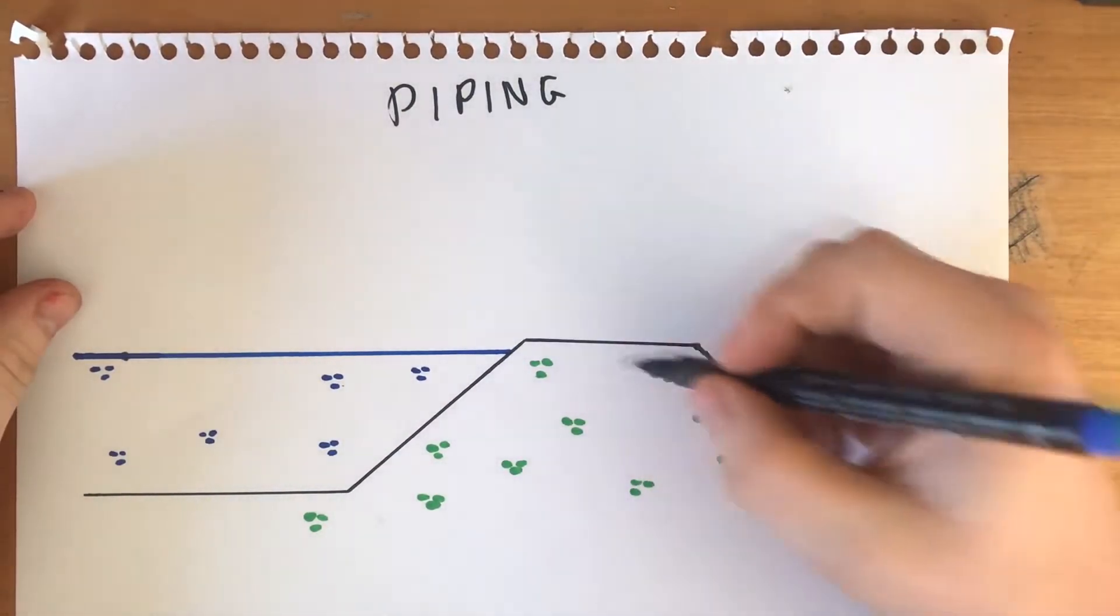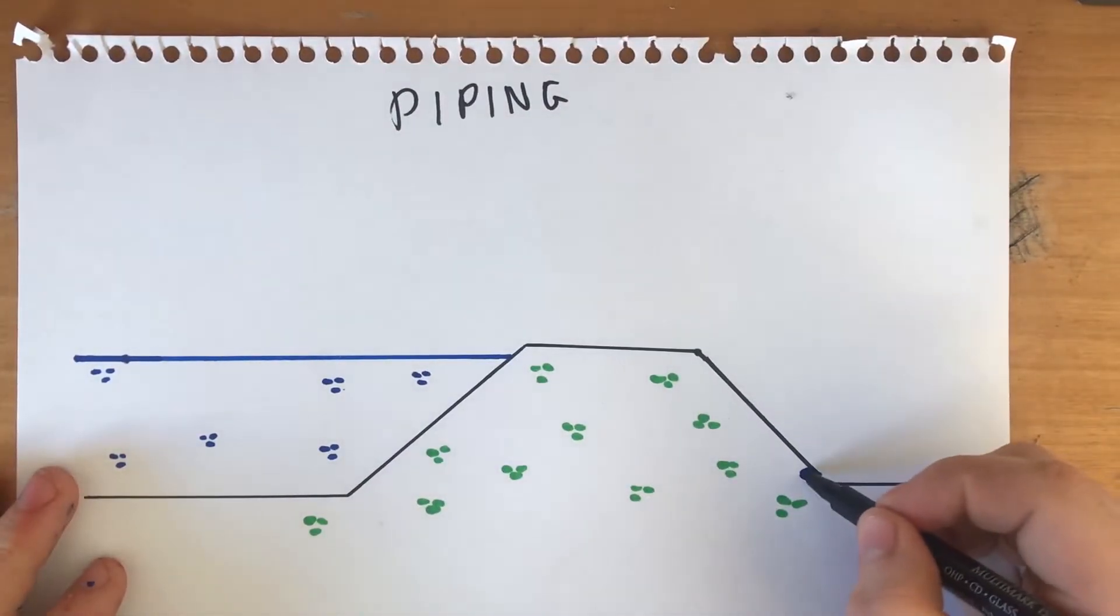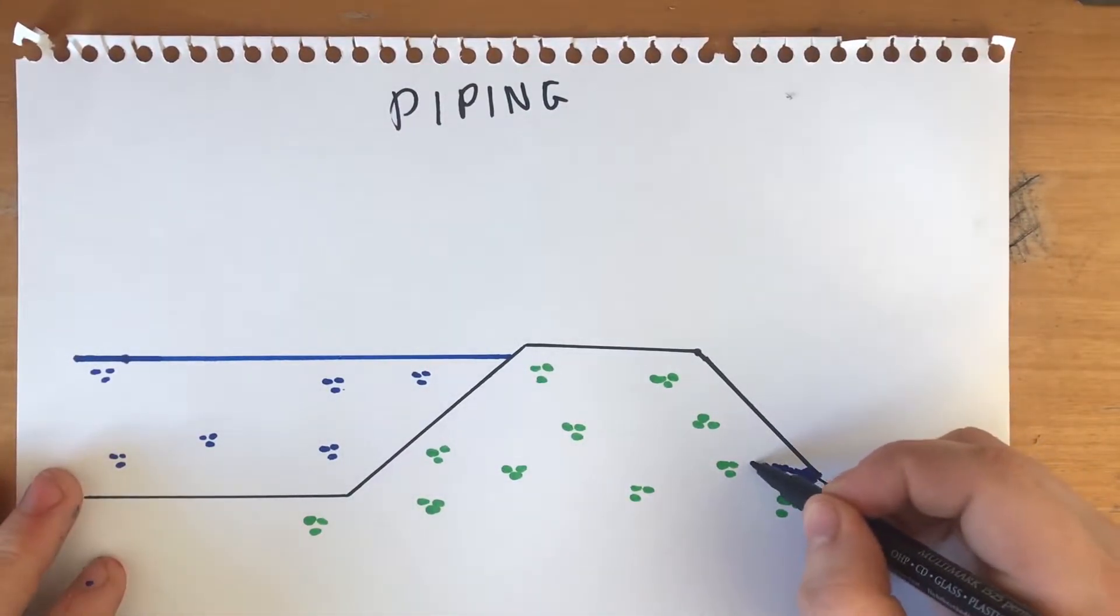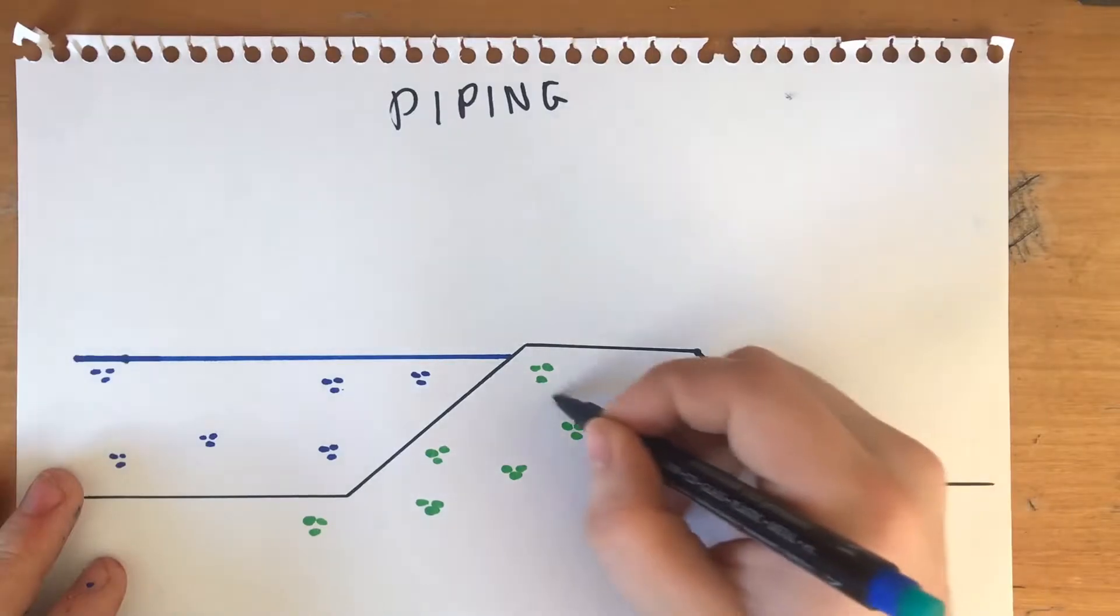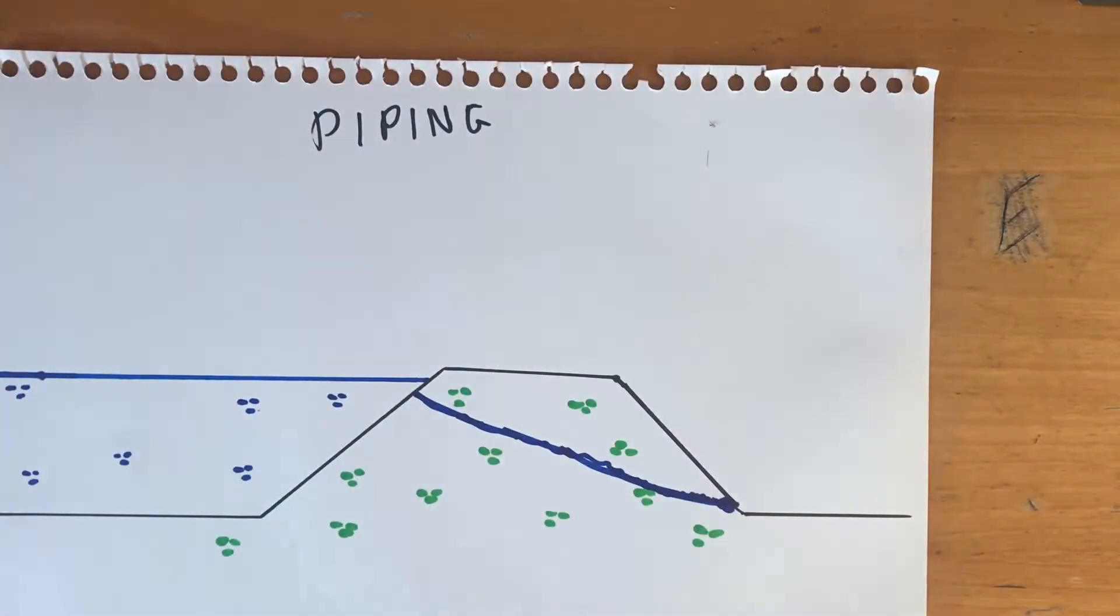Piping. This is when water seeps through the dam and erodes away the downstream side. This will continue to erode away the material, working its way back up through the dam, eventually creating a pipe for the water to freely flow through it.